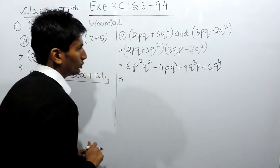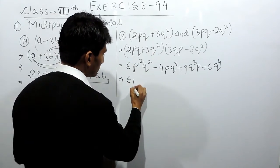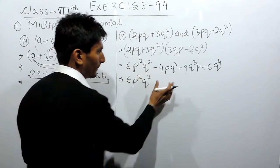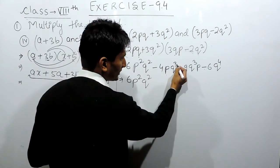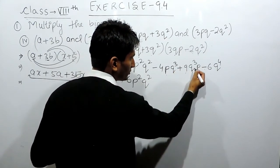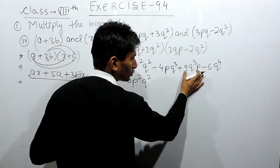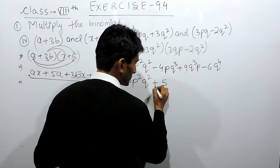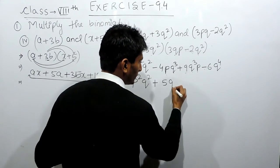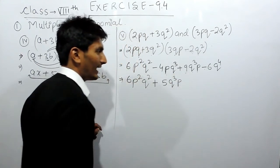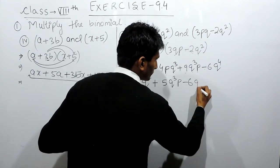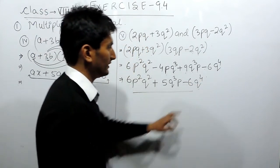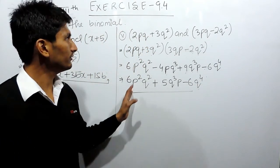Now to further solve this, we have to find the like terms. 6p²q² will remain as it is because there is no like term to it. But pq³ also appears as 9pq³, so these two are like terms and can be solved together. So minus 4 and plus 9: since plus is greater, 9 minus 4 is 5, giving positive 5pq³. And the last term minus 6q⁴ remains as it is because there is no like term. So this is the answer for this last part.